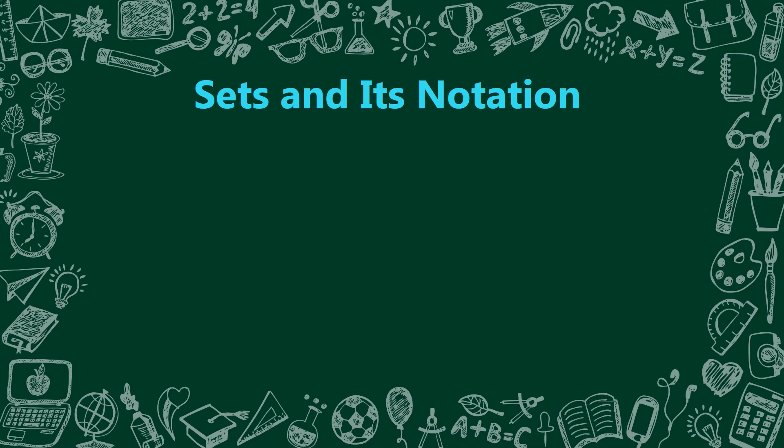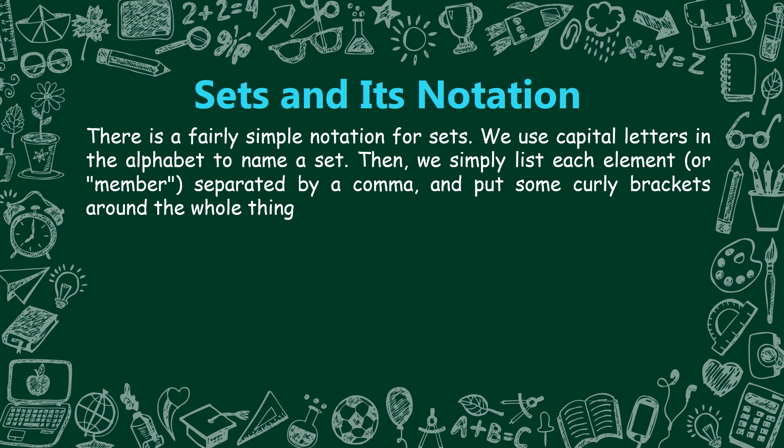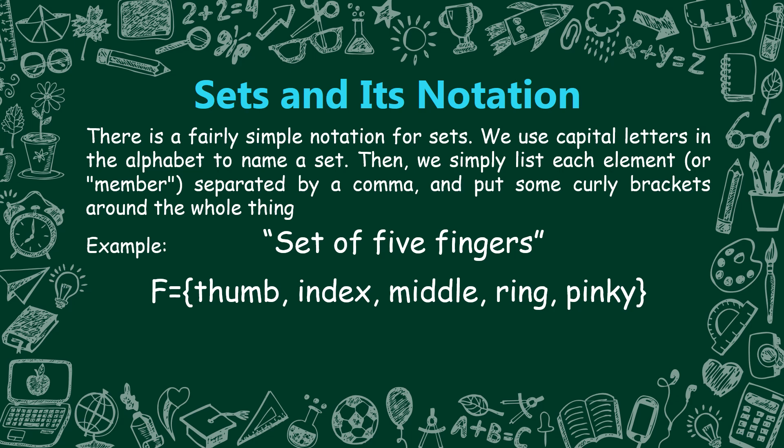Sets and its notation. There is a fairly simple notation for sets. We use capital letters of the alphabet to name a set. Then we simply list each element or member, separated by a comma, and put curly brackets around the whole thing. For example, the set of five fingers: we can write F is equal to thumb, index, middle, ring, pinky — wherein these five are what we call the elements. I used capital letter F because 'fingers' starts with the letter F.